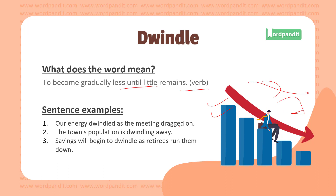The sentence examples for this word reflect the same: 'Our energy dwindled as the meeting went on' — so here something non-physical is dwindling. 'The town's population is dwindling away' — the number of people in the town are gradually lowering down. 'Savings will begin to dwindle as retirees run them down' — so as retirees spend their money, savings would dwindle.